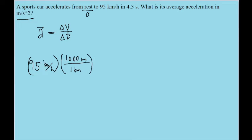And then we convert from hours to seconds by multiplying by the conversion rate of 1 hour over 3600 seconds, because there are 3600 seconds in 1 hour.